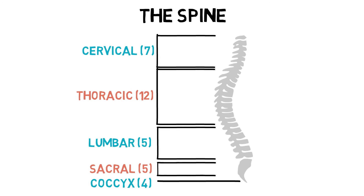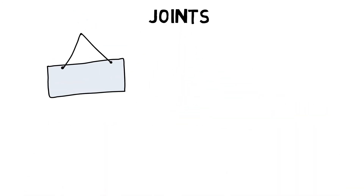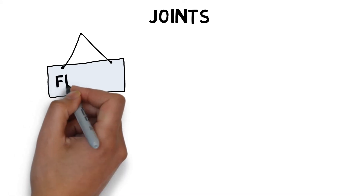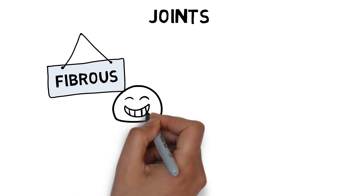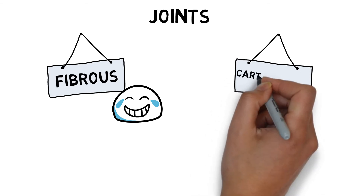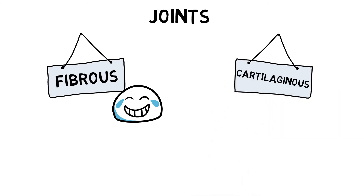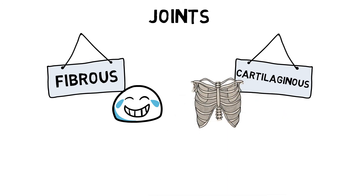Where two or more bones meet is called a joint. There are three different types of joints. Fibrous joints are held by dense fibrous tissue that do not allow any movement, such as teeth held in their sockets. Cartilaginous joints are articulating bones connected by cartilage, which only allow for a small amount of movement, such as ribs or between vertebrae in our spine.